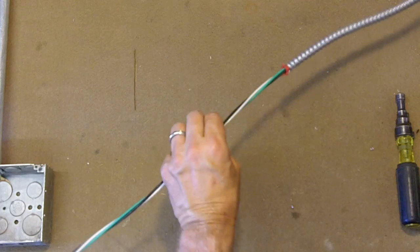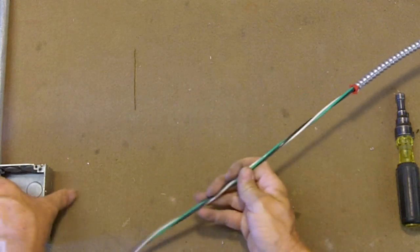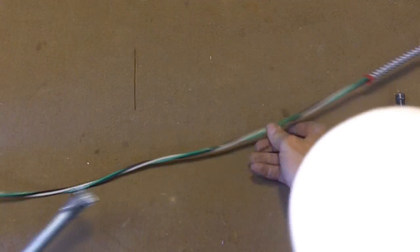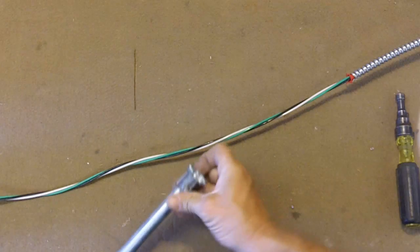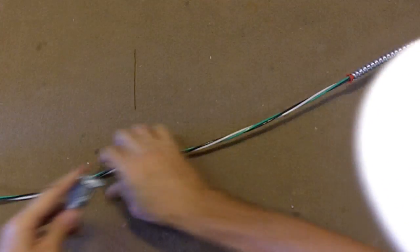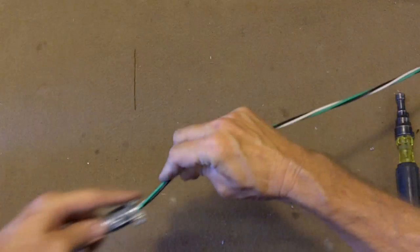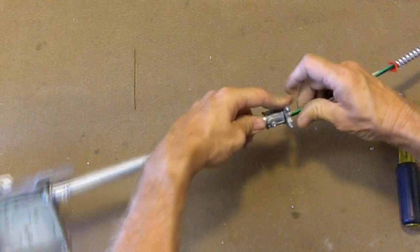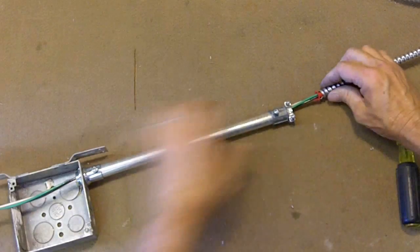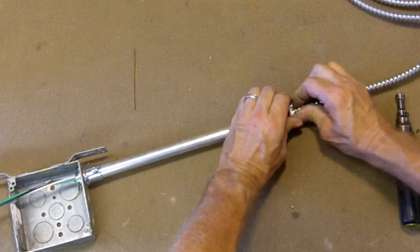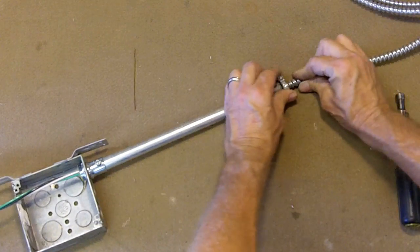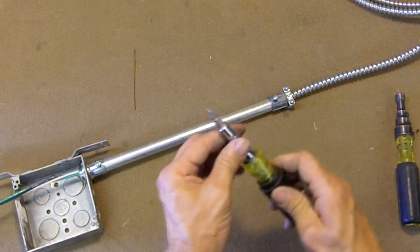Now what we'll do is we will slide this down. Loosen up all those screws. We'll slide this down into our box. And stick it in there. We'll grab our screwdriver.